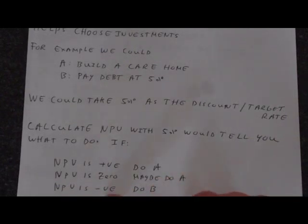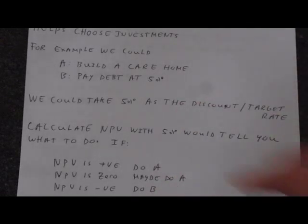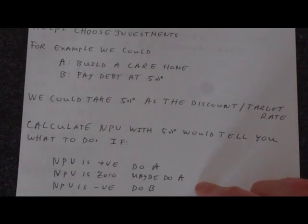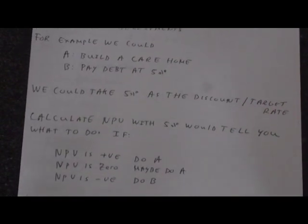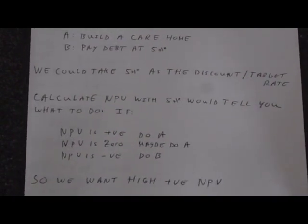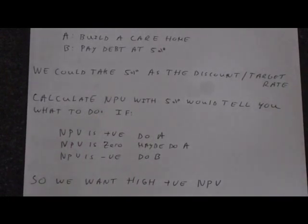If the net present value is negative, you're going to look at doing B. B is the lower risk option as well. You would take other factors into account, not just the net present value. Ideally we want a high positive net present value. If a project has an extremely high net present value and it's very very positive, then there's a lot of leeway in the accuracy of the estimated cash flows. So we can say with a high level of certainty that that's a good project to do.